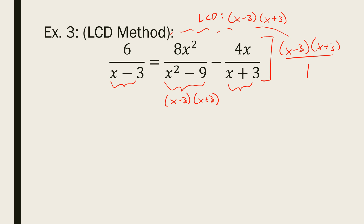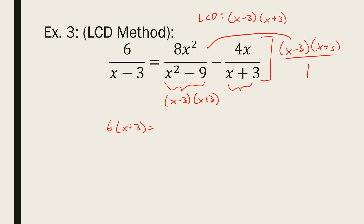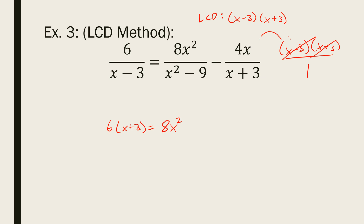Multiplying by x minus 3 times x plus 3 — put it over 1. Distributing to the first term: x minus 3 cancels with x minus 3, leaving 6 times x plus 3. For the middle term on the right side: the bottom is x minus 3 times x plus 3, which cancels both factors on top, leaving 8x squared. For the final term, the minus sign stays, the x plus 3 cancels, leaving 4x times x minus 3. All denominators have canceled — I chose my LCD correctly.